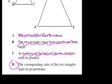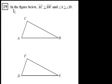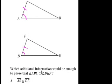Question 19. In the figure below, AC is congruent to DF. So they're equal to each other. And angle A is congruent to angle D. Fair enough. That's angle A. That's angle D. Which additional information would be enough to prove that triangle ABC is congruent to DEF?